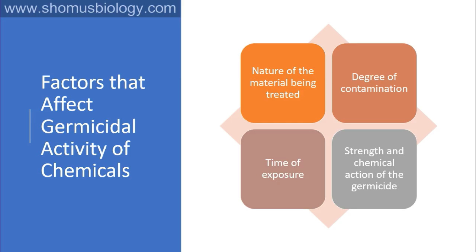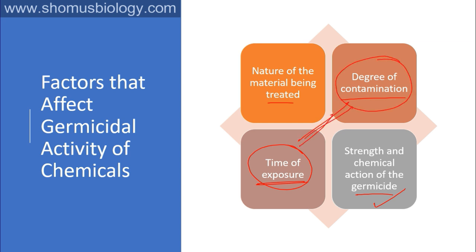Factors that affect germicidal activity of chemicals include: the nature of the material being treated, the degree of contamination, time of exposure, and strength of chemical action of the germicide. Strength is fixed, but time of exposure can be regulated. Degree of contamination plays a vital role — if it's hugely contaminated tissue, even the best germicide cannot kill all microorganisms. If it's just the onset of infection, a decent time of exposure can kill most microbes.